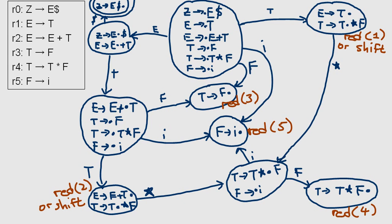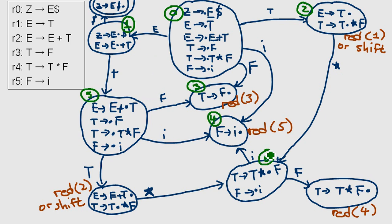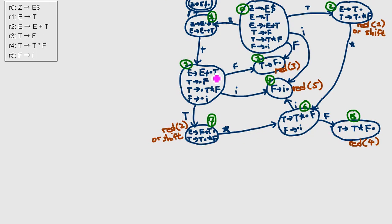That's it for the state machine. Before we go on, we want to add state numbers. You can add the states with numbers however you want — I just follow my example on paper. Now we rearrange the state machine to be smaller, the rules are smaller, and now we get the table.